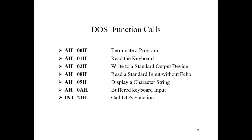Finally, some DOS function calls: AH=00H to terminate a program, AH=01H to read the keyboard, AH=02H to write to a standard output device, AH=08H to read standard input without echo, AH=09H to display a character string, AH=0AH for buffered keyboard input, and INT 21H to call a DOS function. So these were some of the assembler directives and DOS function calls. Thank you for now. We will continue in the next lecture.